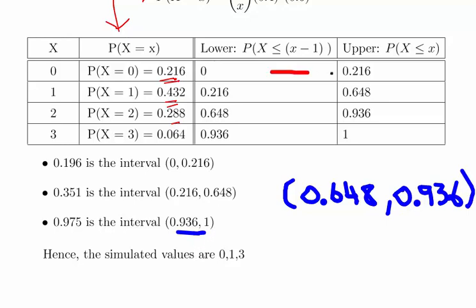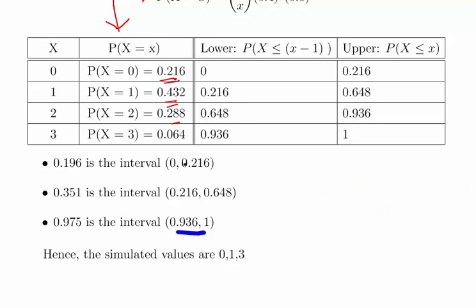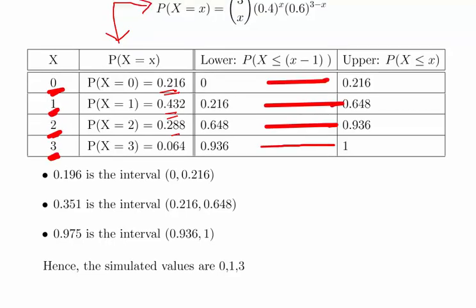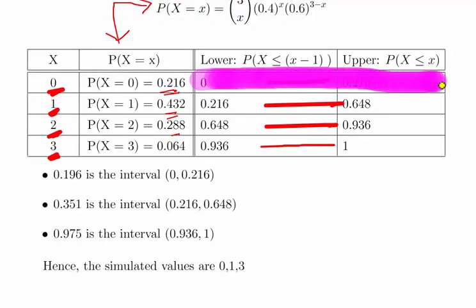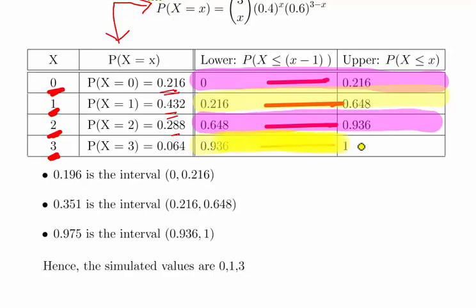If a uniform value falls into one of those intervals, that gives us our simulated value of x. We have four intervals or bins, each with a lower and upper bound. They're all mutually exclusive, so you can only be in one bin. The first bin is for x equals 0, the second for x equals 1, then x equals 2, and x equals 3.